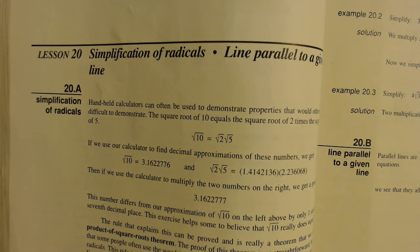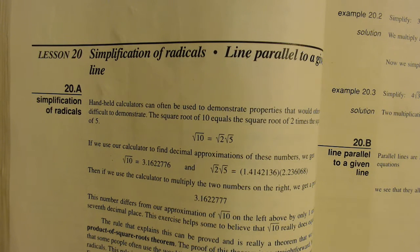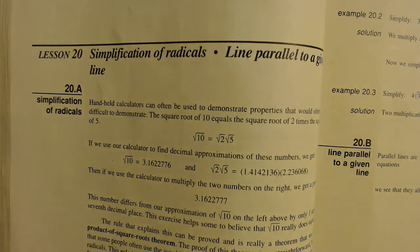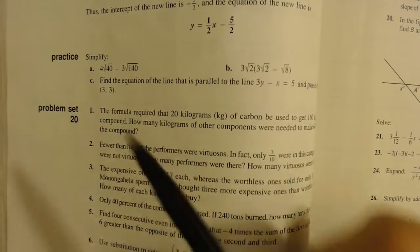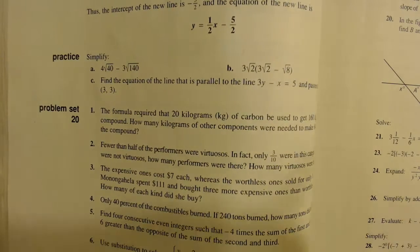Algebra 2, Lesson 20, Simplification of Radicals and Line Parallel to a Given Line. Beginning in practice, we're going to go through A, B, and C, starting with simplification of radicals.